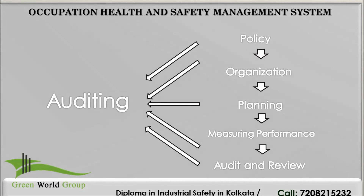Occupational Health and Safety Management System. Successful health and safety management can only be achieved with commitment from all levels of the organization. A structured and planned approach must be adopted and implemented. Safety must be regarded as a prime responsibility of all levels of management, and not just of those with specific responsibilities given in this document. A good health and safety management system will contain the following elements.